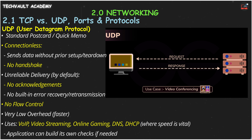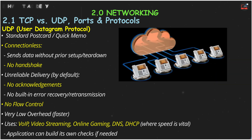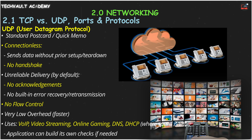UDP has no flow control, which means it has very little overhead and is much faster. UDP is often used for real-time communication where speed is more important than perfect reliability, like VoIP, video streaming, or online gaming. Getting an IP address automatically with DHCP or looking up website names with DNS also commonly uses UDP. While UDP itself doesn't resend, the application using it can build in its own checks if needed.